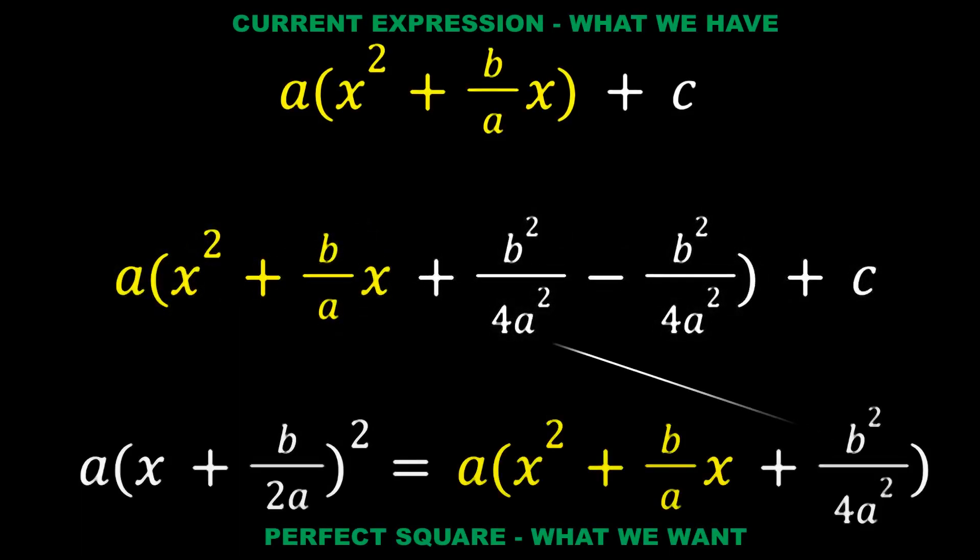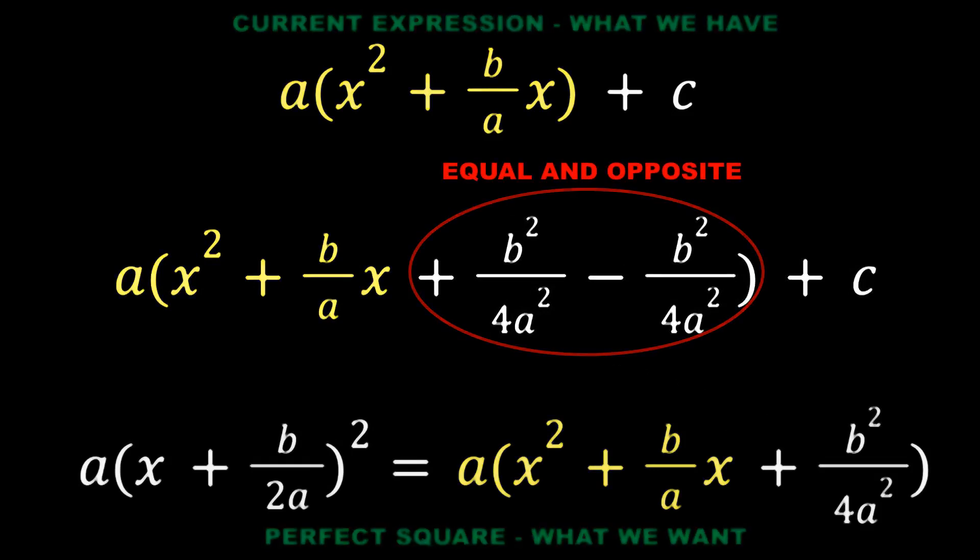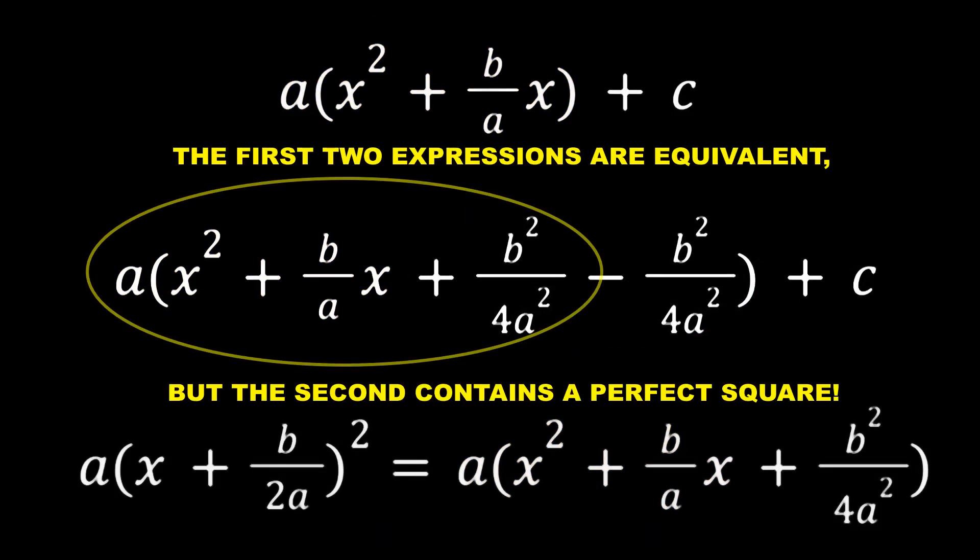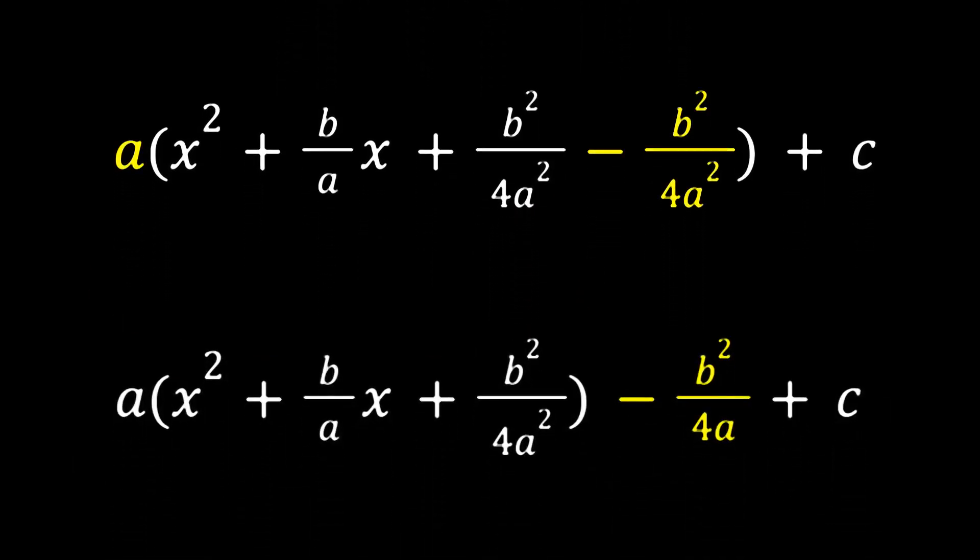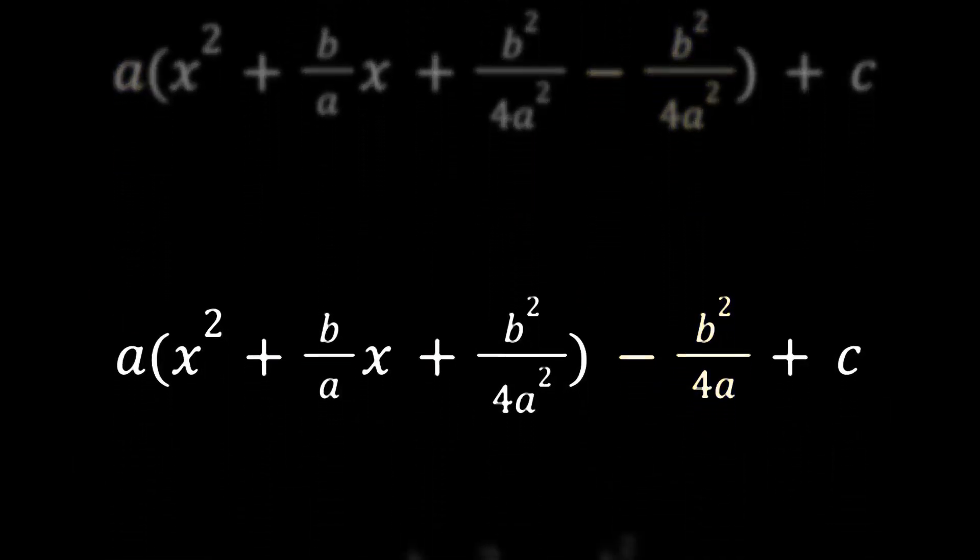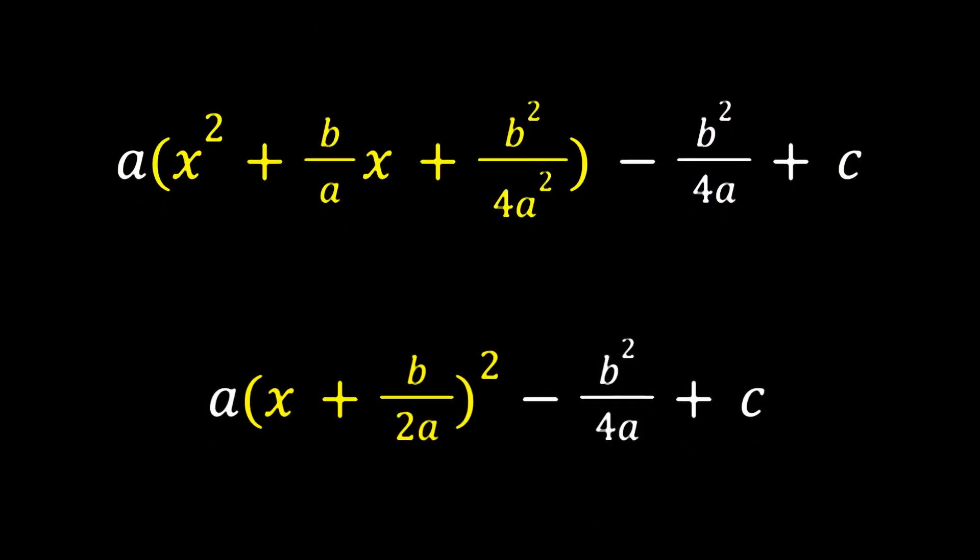Whatever you add to complete the square, you have to subtract again so everything stays the same. Now just distribute the a to that last term and leave it outside the parentheses. Now that you have a perfect square, let's factor it.